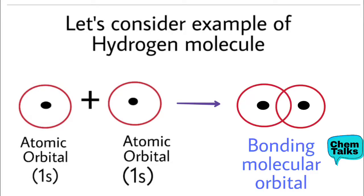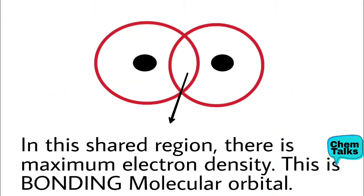For the bonding molecular orbital, the 1s atomic orbital of one hydrogen and the 1s atomic orbital of the other — having the same energy and symmetry — interact with each other. They overlap with each other, and in the shared region there will be maximum electron density. We call this the bonding molecular orbital.